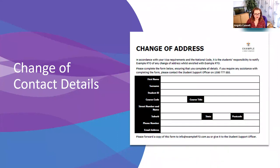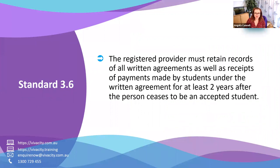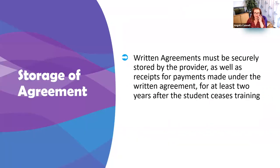On Unicorn you can access a change of address details form that students can complete and provide to the RTO. This can also be set up as an electronic form. The registered provider must retain records of all written agreements as well as receipts of payments made by students under the written agreement for at least two years after the person ceases to be accepted as an international student. Written agreements must be securely stored along with payment receipts for at least two years after the student ceases training.